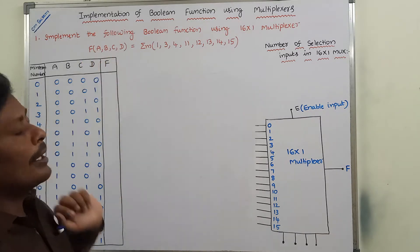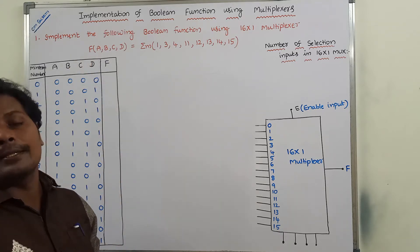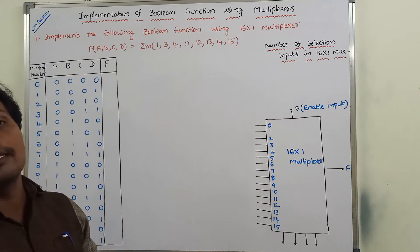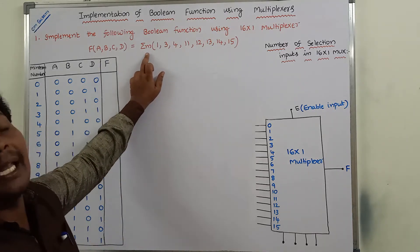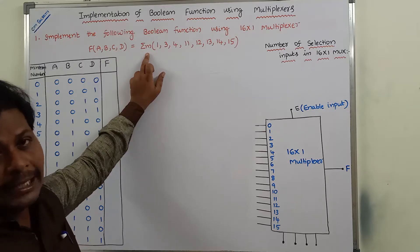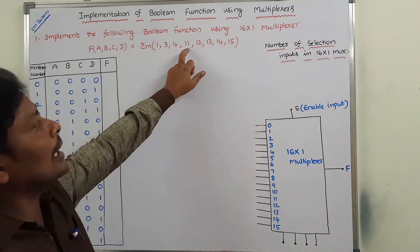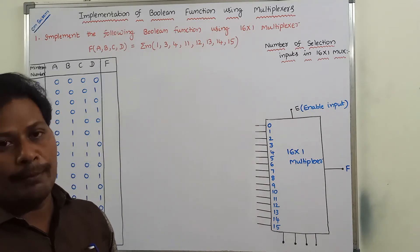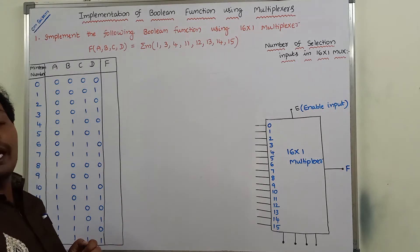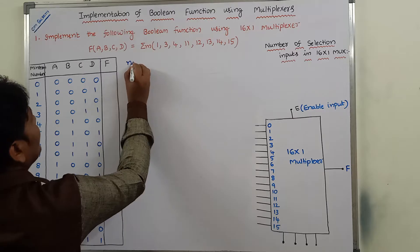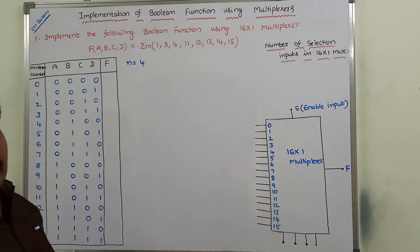Here, these are the input variables. This Boolean function contains four input variables: a, b, c, and d. Sigma m means sum of minterms. The minterm numbers given are 1, 3, 4, 11, 12, 13, 14, and 15. The number of input variables n is equal to 4.